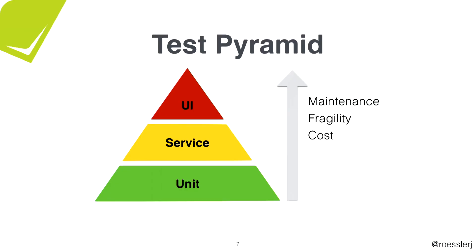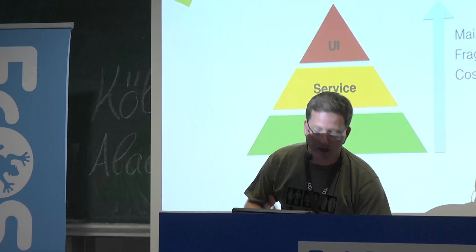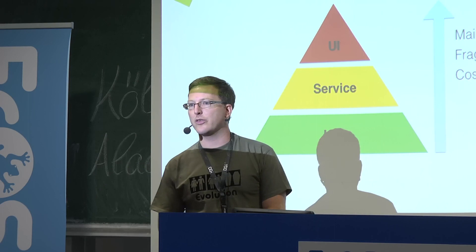This is the reason for the famous test pyramid, which says that on the unit level you should test as much as you can, and less in between, because that's where the problems start. On the UI level you want to test as few as possible, and as late as possible — only once the software is stabilized and doesn't change anymore. The cost of agility and maintenance go up as you go up the stack.